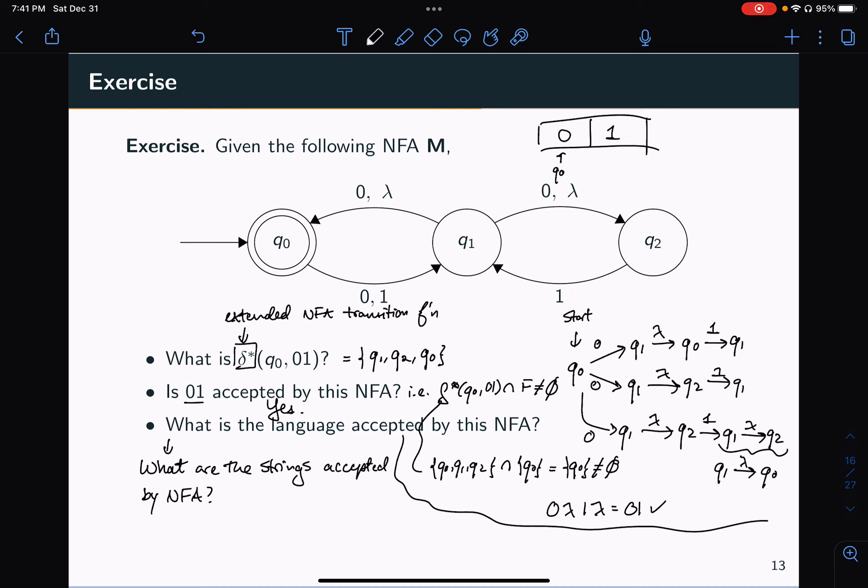So I know that any computation of my NFA is going to start at Q0. And then no matter what I read, I'm going to have to go to Q1. Now, once I'm at Q1,